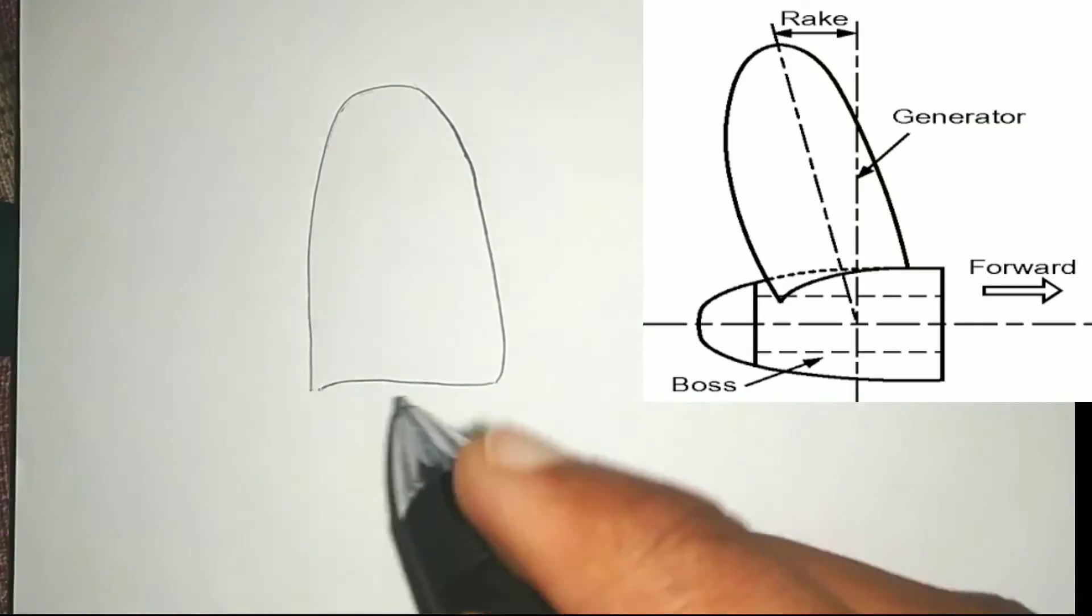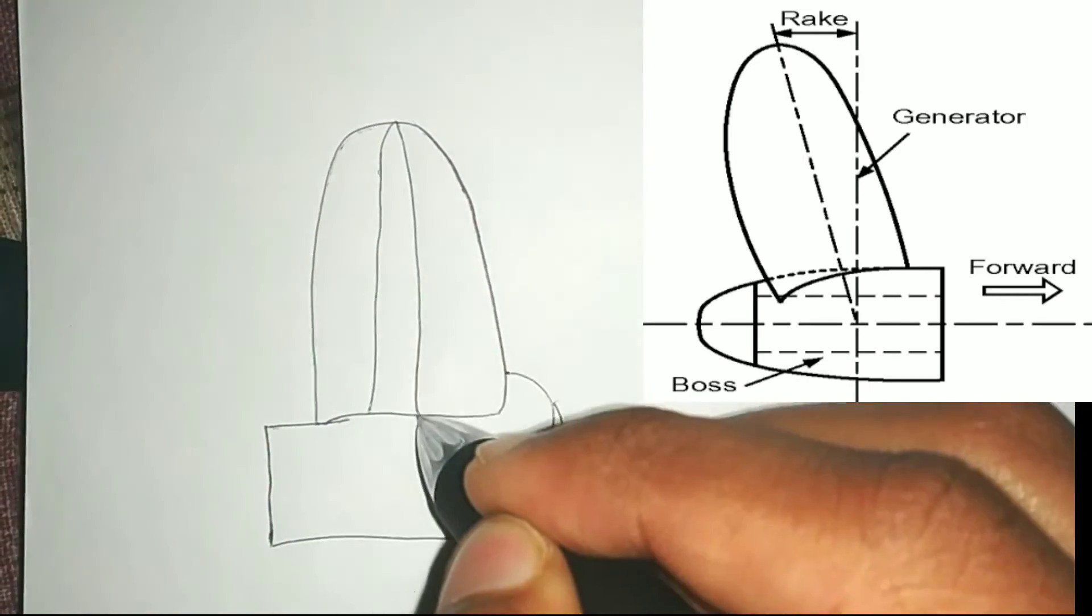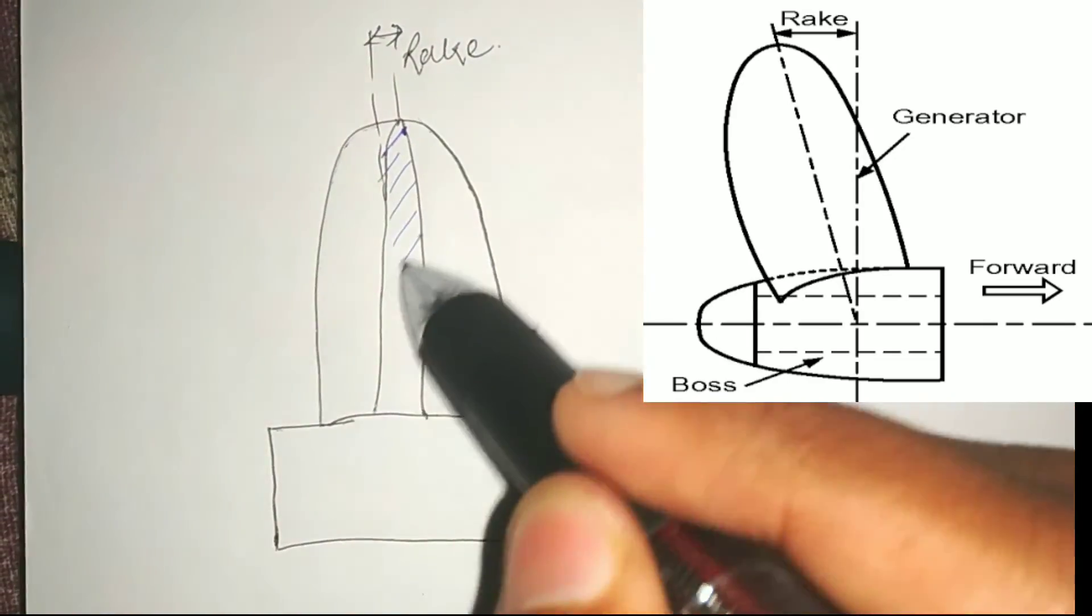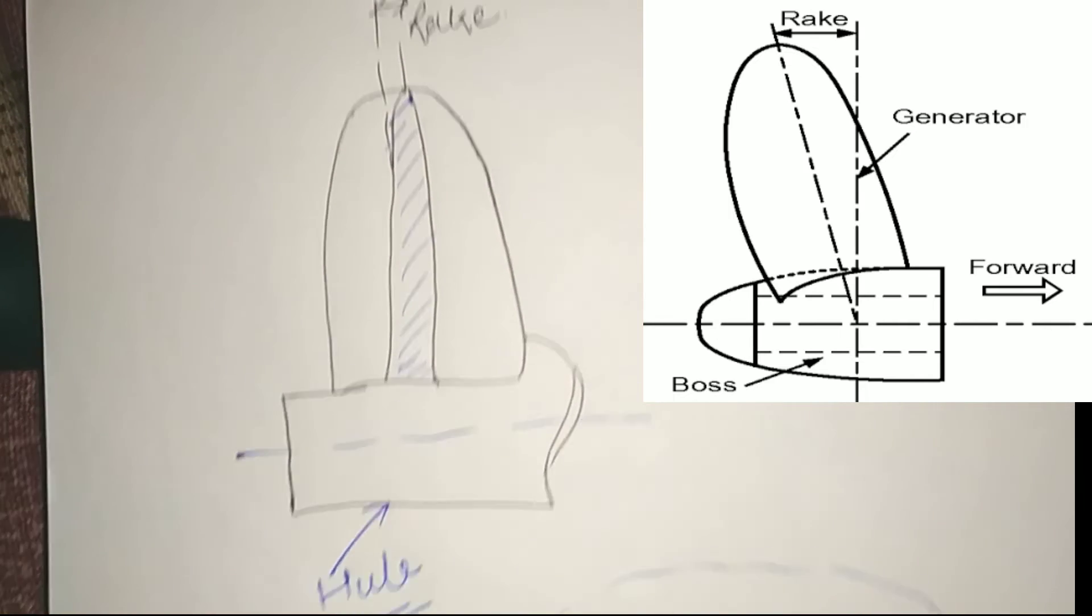Rake is the forward or aft inclination of the blade center axis with the vertical.